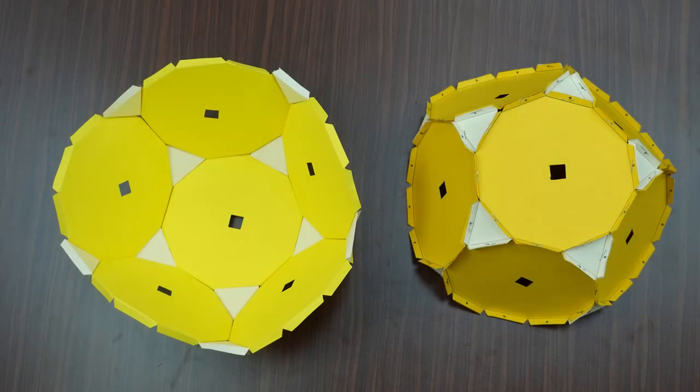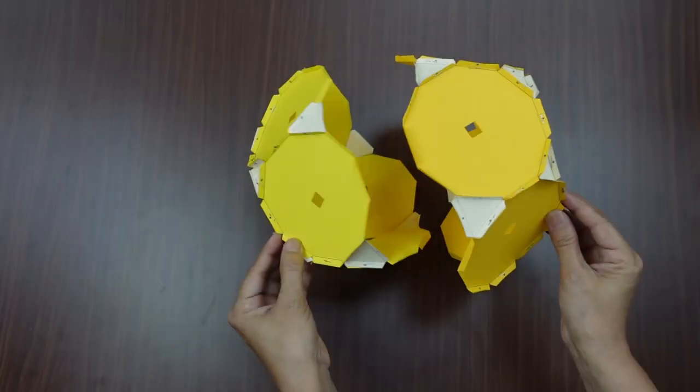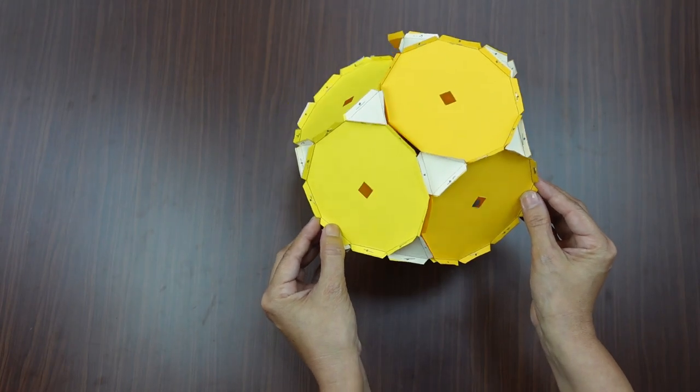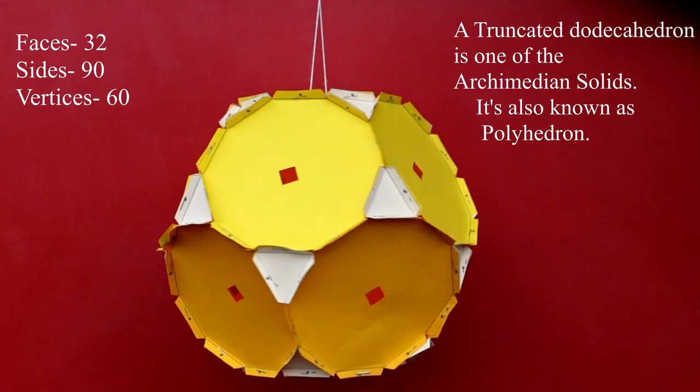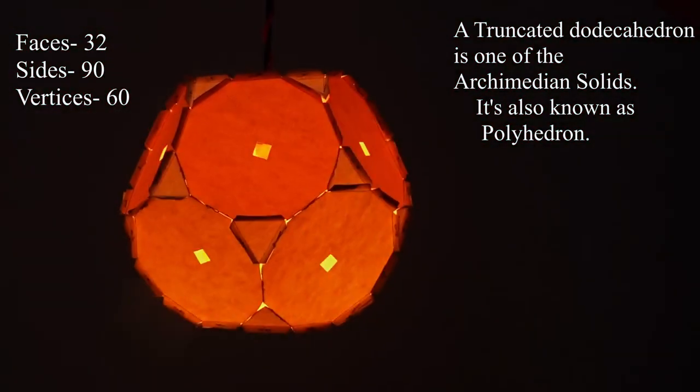Thus, when all the flaps are joined to the side flaps, we see the truncated dodecahedron formed. This truncated dodecahedron has 32 faces, 90 sides, and 60 vertices.